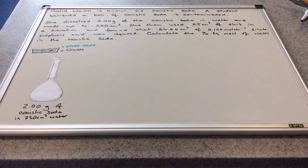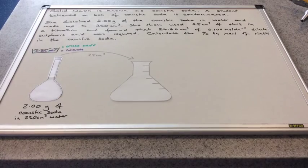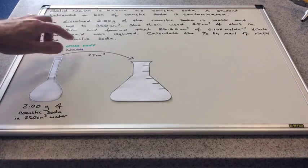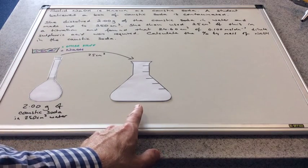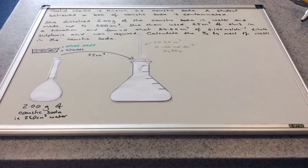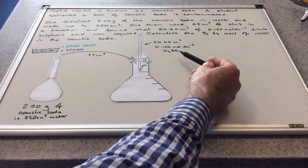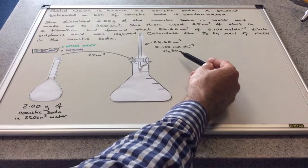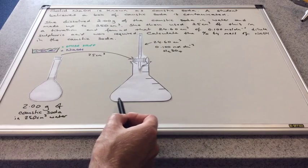She's taken 2 grams of this caustic soda and dissolved it into 250 cm³ of water in a volumetric flask. Everything dissolves, the sodium hydroxide and the other stuff as well. She's then taken 25 cm³ of this solution and put it into a conical flask to carry out the titration. She's used 0.1 moles per decimetre cubed sulfuric acid and found she needed 24.6 cm³ to neutralize the caustic soda solution.